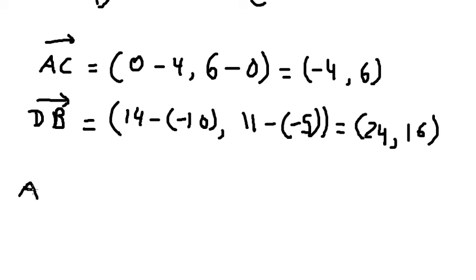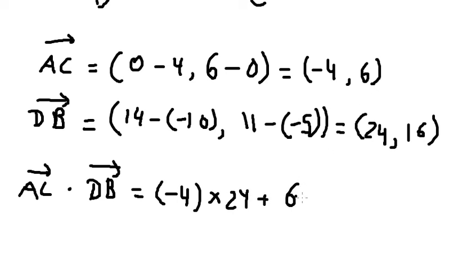Now we need to use the dot product between AC and DB. So we have negative 4 multiplied by 24 plus 6 multiplied by 16. This gives us 0.